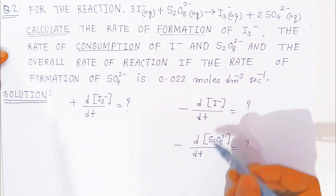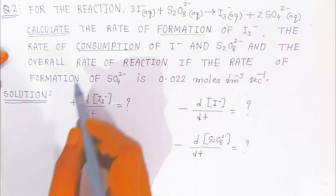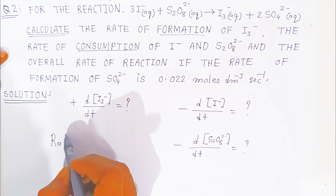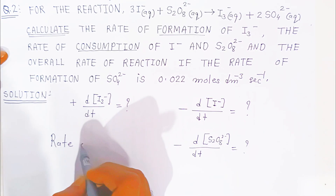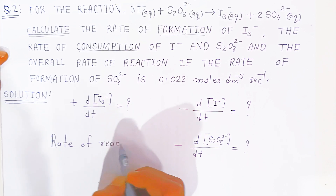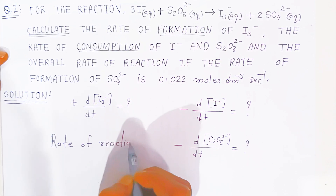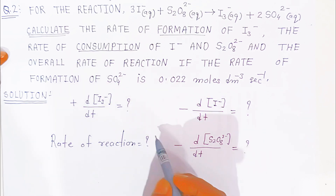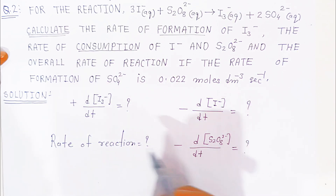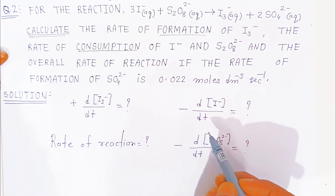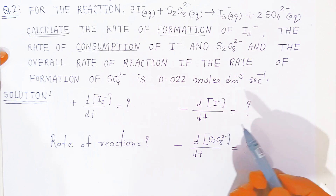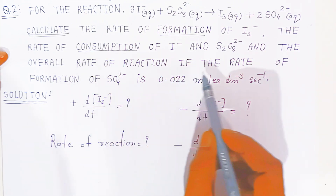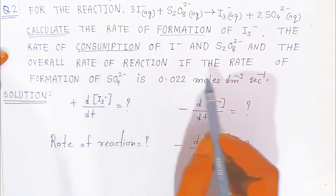What will be the rate of consumption of these two ions and the overall rate of reaction? We also have to calculate the rate of reaction. So four things you have to calculate for four marks — students in examination they will ask. What else is given? The overall rate of reaction.